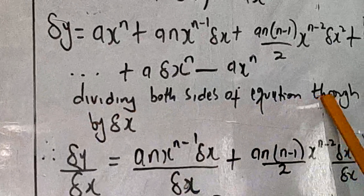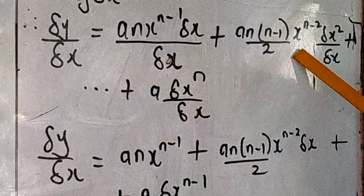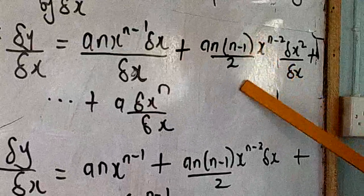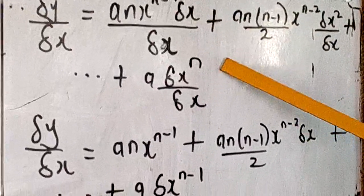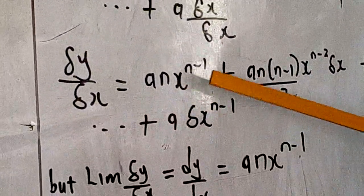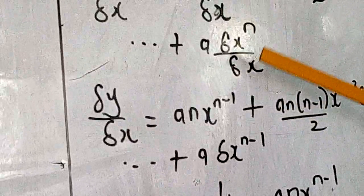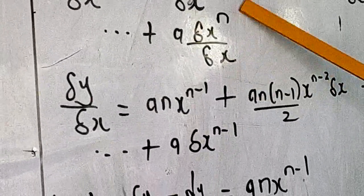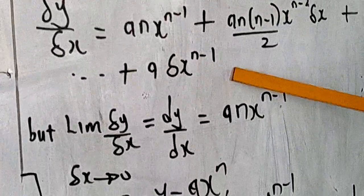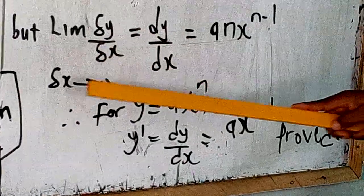Now we are looking for delta y divided by delta x. Dividing through by delta x, we place delta x under each of these terms. Delta x cancels with delta x in each term, and using the law of indices, delta x raised by 2 divided by delta x becomes delta x raised by 1, and similarly each higher-order delta x term retains at least one power of delta x remaining below.